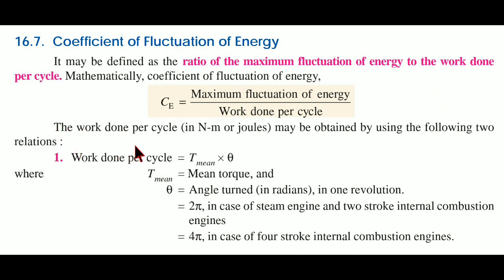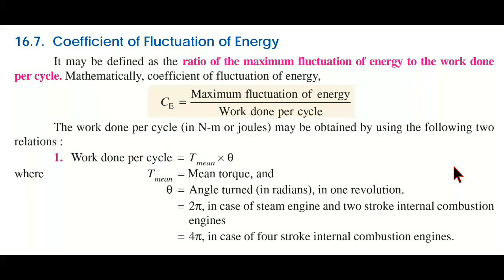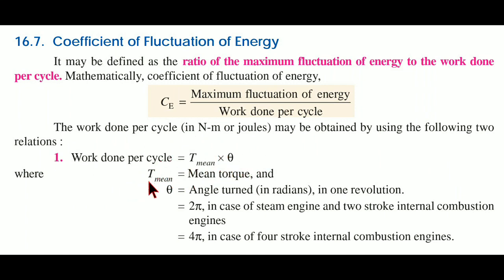The work done per cycle in Newton meters or joules may be obtained by using the following two relations. Relation one: work done per cycle equals T_mean multiplied by θ, where T_mean is the mean torque and θ is the angle turned in radians in one revolution. θ equals 2π in the case of a steam engine and 2-stroke internal combustion engine, and θ equals 4π in the case of 4-stroke internal combustion engines.